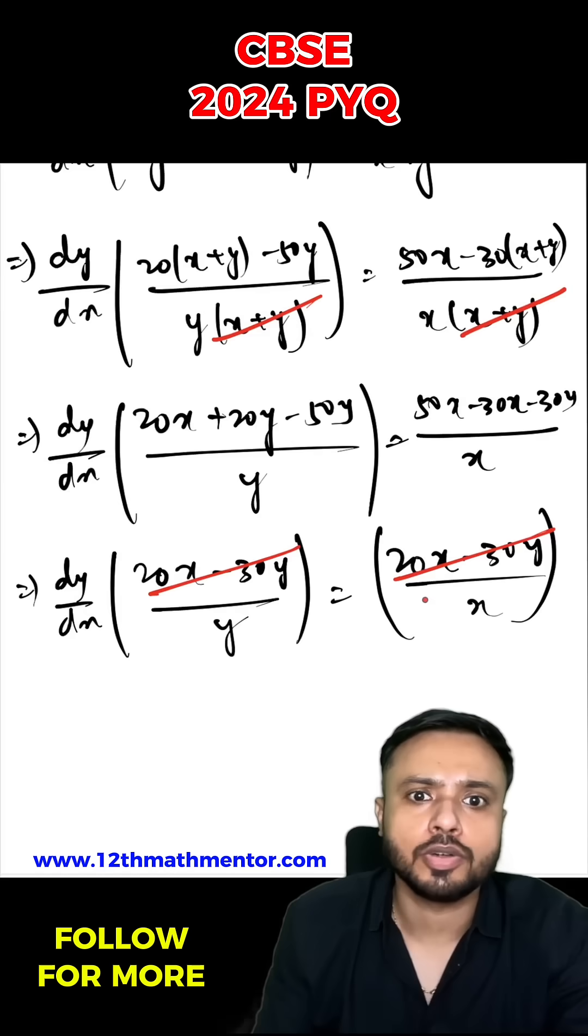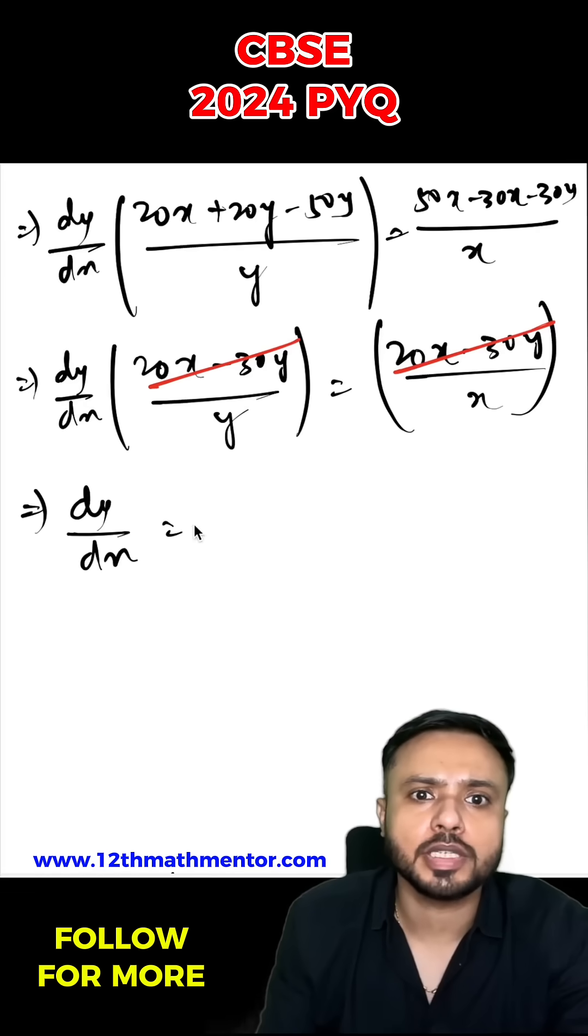So now this 20 minus x and 30 minus y is gone. When I will simplify it, you will get dy upon dx equals to y upon x. So this is what we had to prove.